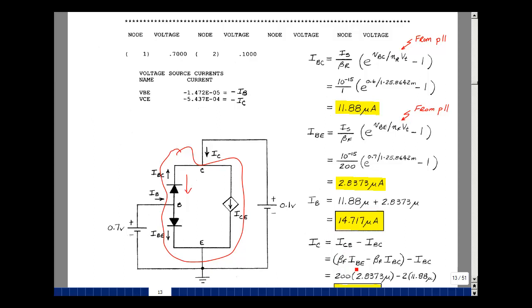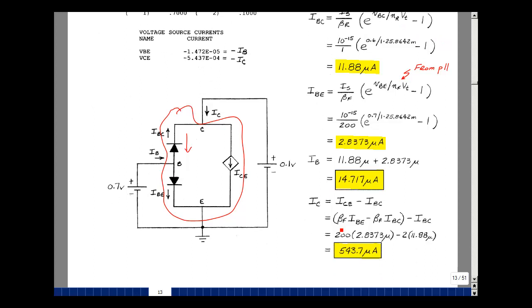From our page 11 equations, I sub ce is equal to beta f times I be minus beta r times I sub bc. That's this term. And then I got minus I sub bc. Beta f is 200. I sub be we calculated as 2.8373 microamps.